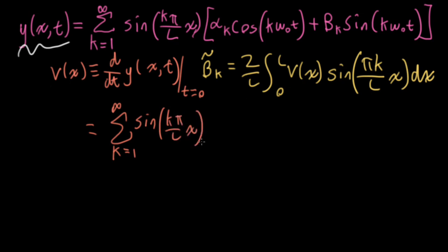And when I take the derivative, I'll wind up with a beta k, and then a k omega naught from the chain rule, and taking the derivative of the sine then gives me a cosine, omega naught t. And when I evaluate this at t equals zero, this gives me a one.